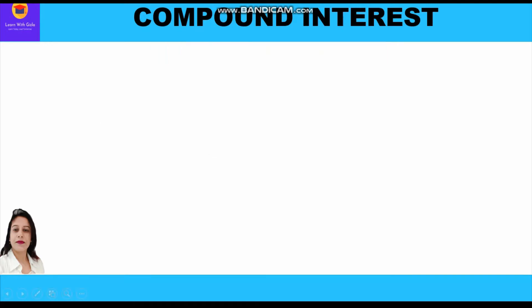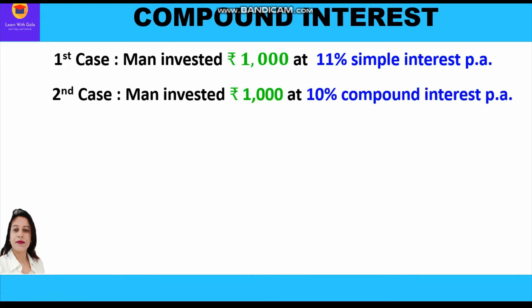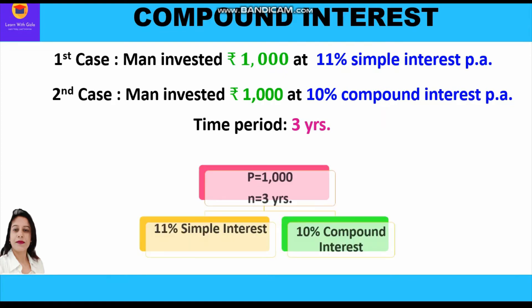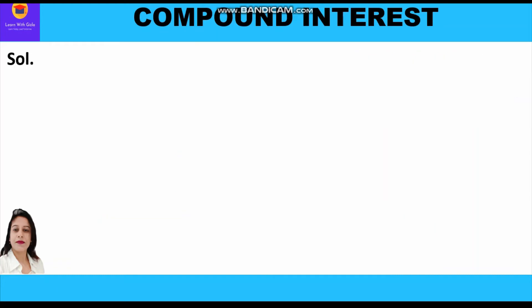There are two cases in this question. In the first case, the man invested rupees 1000 at 11% simple interest, and in the second case, rupees 1000 at 10% compound interest. The time period is the same in both cases, that is three years. The principal is the same at rupees 1000, n is three years — one case is 11% simple interest and the second is 10% compound interest.